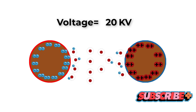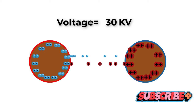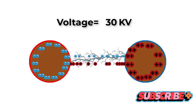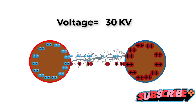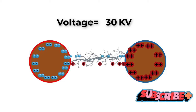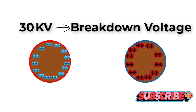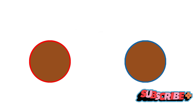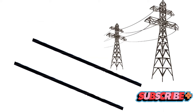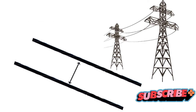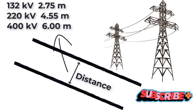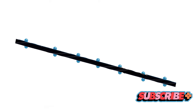Corona discharge is primarily caused by the ionization of air near conductors when the electric field strength surpasses a critical value. When the electric field gets too strong, it can rip electrons off of air molecules, creating a glowing region of ionized air, or corona. The size and shape of the conductors can also influence corona discharge — larger and sharper conductors can intensify the electric field and increase the chances of corona discharge. The condition of the conductor's surface is another factor; a rough surface can create more points for the electric field to concentrate, leading to more corona.